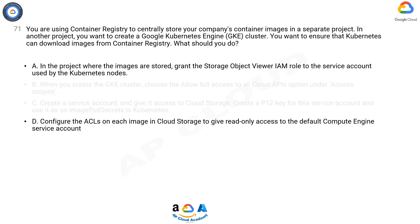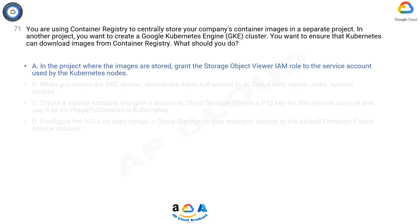The correct answer is A. IAM permissions determine who can access resources. All users, service accounts, and other identities that interact with Container Registry must have the appropriate Cloud Storage permissions. By default, Google Cloud uses default service accounts to interact with resources within the same project. For example, the Cloud Build service account can both push and pull images when Container Registry is in the same project.